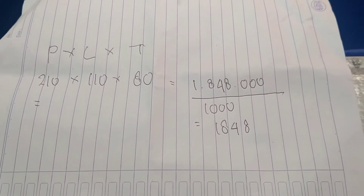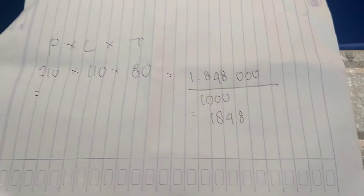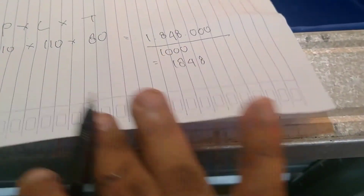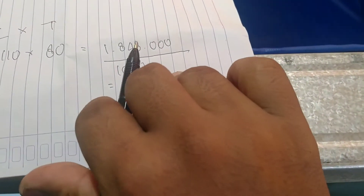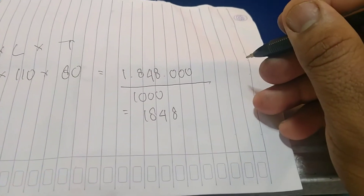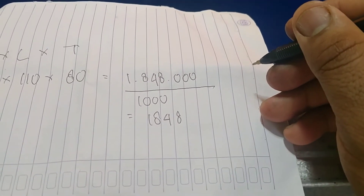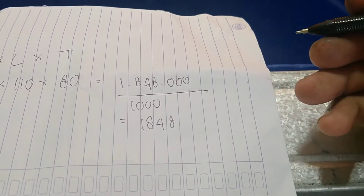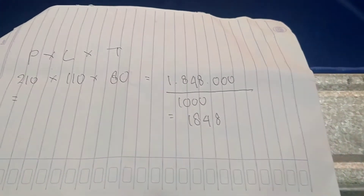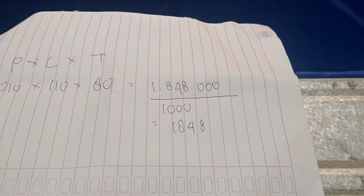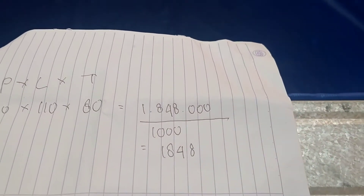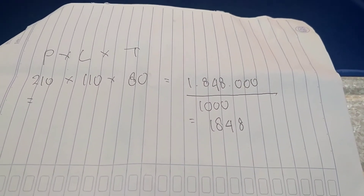Untuk kolam ini, kebutuhannya adalah 1848 liter per jam. Tetapi nanti saya akan menggunakan pompa 5800 liter per jam, supaya sirkulasinya lebih baik dan penyerapan kotorannya juga lebih baik.